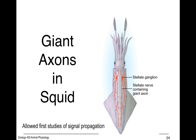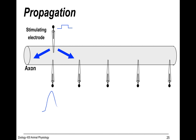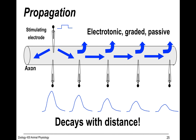Invertebrates have unmyelinated axons, so they tend to be really fat in diameter. When you extract an axon, you can put electrodes on it, and if you stimulate it you can record what happens and you'll see a response. This is a graded response because over time it decays. Graded responses decay with time or distance.